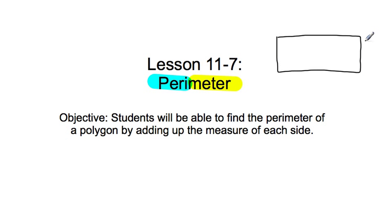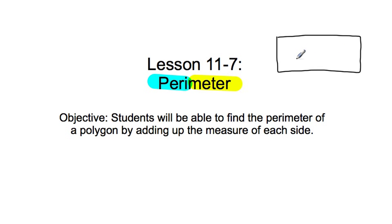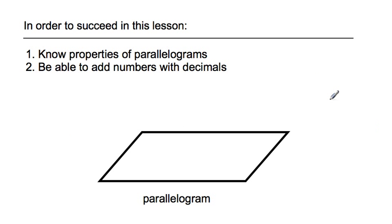Think about perimeter being like the fence of a yard — that would be your perimeter. You're not going to put a fence in the middle of your yard; it's going to go around the outside. So when you're building a fence, you need to know the perimeter, not how much space is taken up on the inside. That's area. Perimeter is the measure of something around the outside.